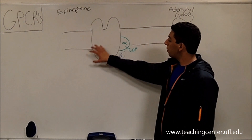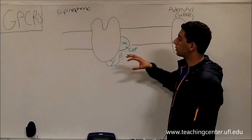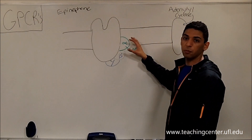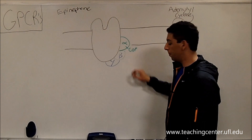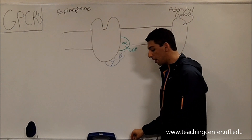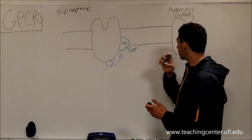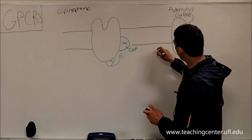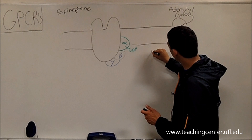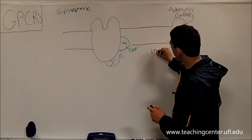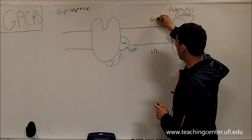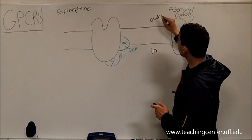This that I've drawn behind me is the plasma membrane of a cell. It doesn't really matter what kind of cell — let's just say it's a cell. This side is going to be the inside of the cell, and this side is going to be the outside.